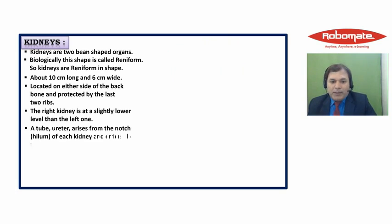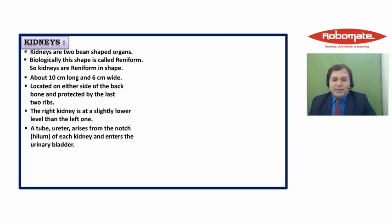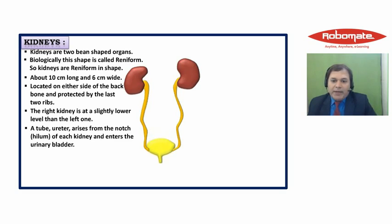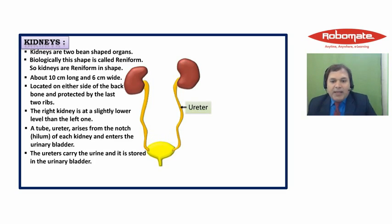A tube called the ureter arises from the notch of each kidney and enters the urinary bladder. This notch is called the hilum. You can see the ureters arising from the hilum of the kidney, and both ureters then enter into the urinary bladder. The ureters carry urine, which is stored temporarily in the urinary bladder.